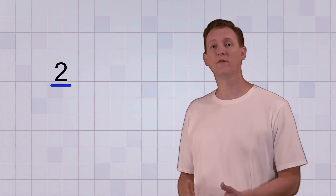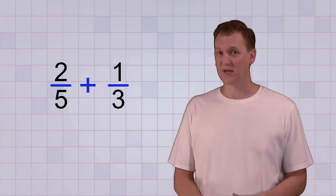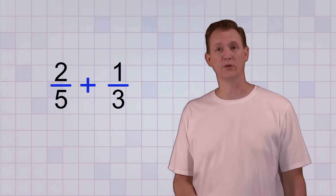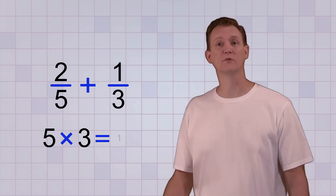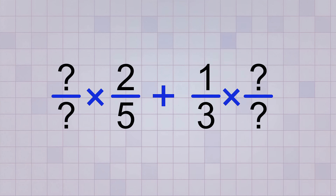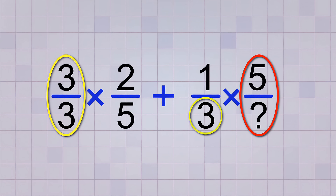Let's add the fractions 2 over 5 and 1 over 3. These are not like fractions because they have different bottom numbers, so we're going to change them. The common denominator we will use is the product of the bottom numbers. We change them by multiplying each fraction by a whole fraction. The first whole fraction is going to be 3 over 3 because 3 is the second fraction's denominator. And the second whole fraction is going to be 5 over 5 because 5 is the first fraction's denominator.